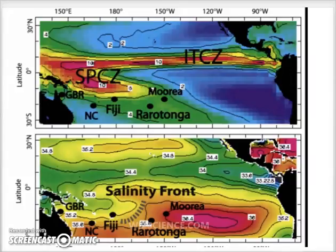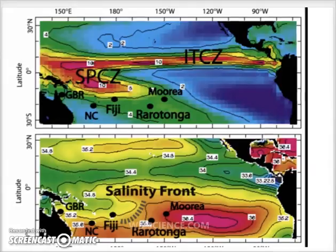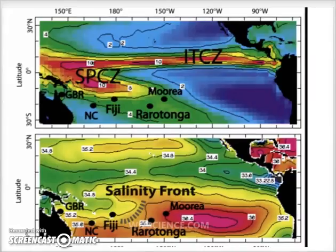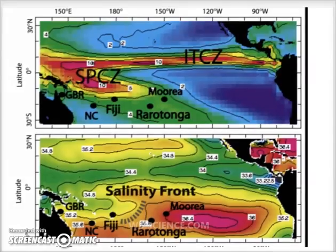Over subpolar oceans in both hemispheres there is a distinctive type of weather system known as the polar low. These have a diameter of only 500 to 1,000 kilometers and a lifetime of a couple of days. They typically form near the sea ice margin where there are steep temperature gradients and beneath an upper-level cold low, spinning up in 12 to 18 hours.